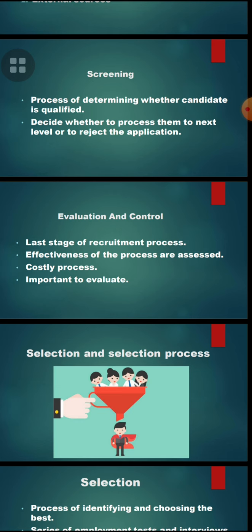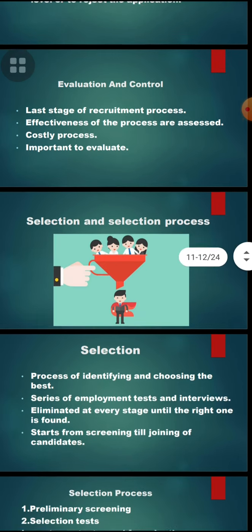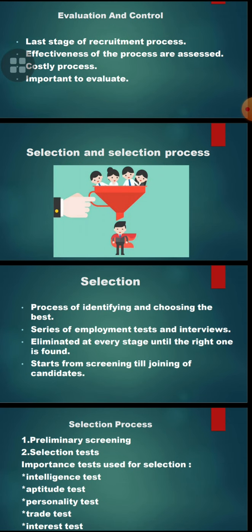That is all about the recruitment process. Now, moving to the next part: what is selection and the selection process? Selection is the process of identifying and choosing the best candidate through a series of employment tests and interviews, eliminating candidates at every stage until the right one is found. It starts from screening until the joining of the candidate, and the candidate has to pass many steps.